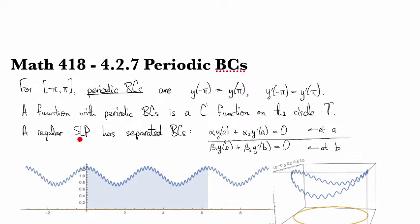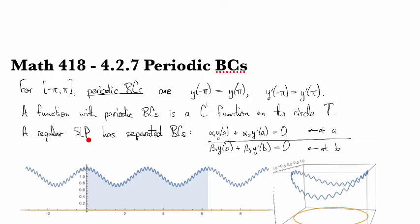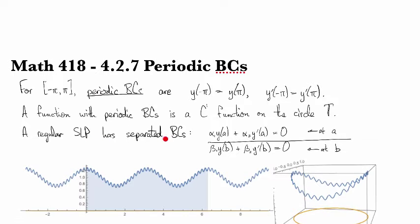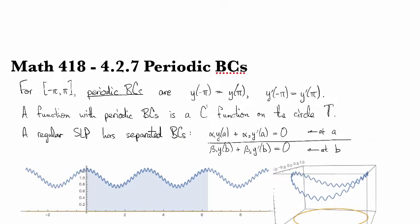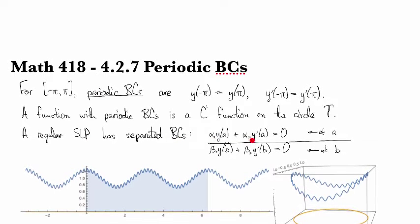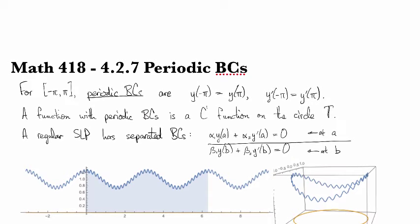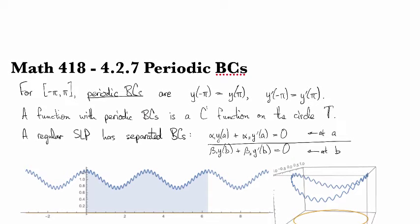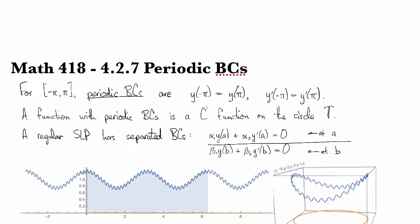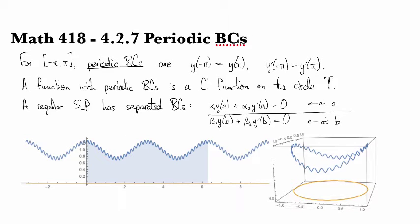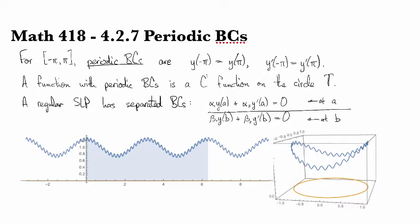Okay, so a regular Sturm-Liouville problem, like we saw before, has separated boundary conditions. And so in other words, there's the boundary condition at a, and there's the boundary condition at b, and the values of y or y prime between a and b are not related. So that's very different from what we've got in this periodic case. So for periodic boundary conditions, this is not considered a regular Sturm-Liouville problem. So let's look at an example.